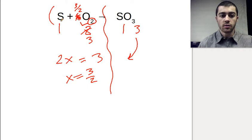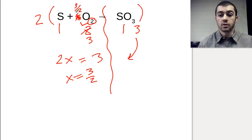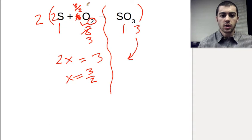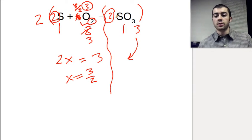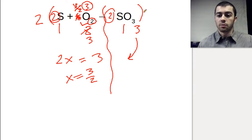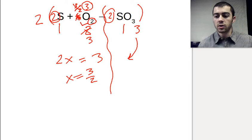To finish this off, we'll take the whole equation and multiply by two to get rid of this fraction. So this gives us two sulfurs, and we now have three for our final coefficient with oxygen, and a two for our final coefficient with sulfur trioxide. So the fraction method works here. Just remember, at the end, multiply by two to clear out your fraction.